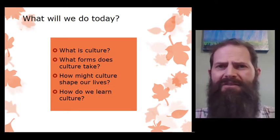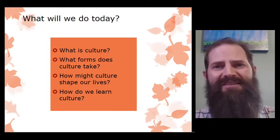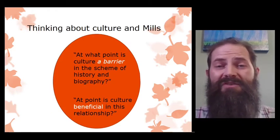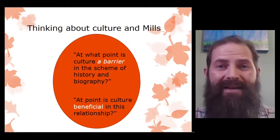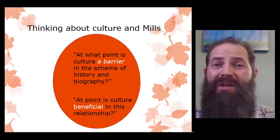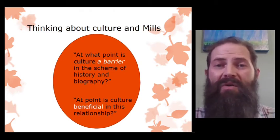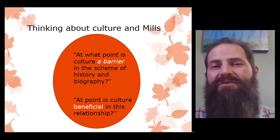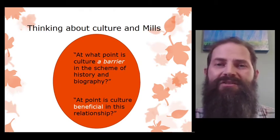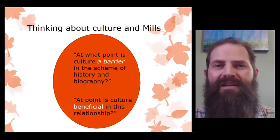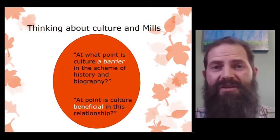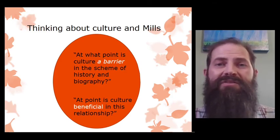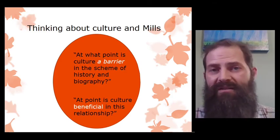Well, let's get started. This is exciting. Our first idea involves going back in time. We need to think about something we've already learned, and that's C. Wright Mills' sociological imagination. With sociological imagination, Mills gave us two ideas: biography and history.